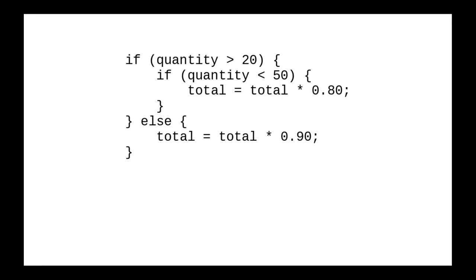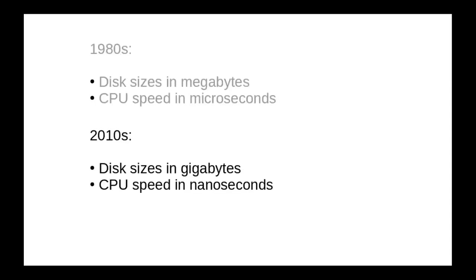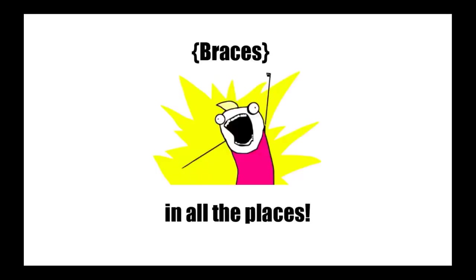Why do we have this no-braces-with-one-statement rule anyway? Back in the 1980s, when disk sizes were measured in megabytes or kilobytes and CPU speeds were on the microsecond scale, every byte counted. Braces on 500 if statements would add a large burden, and minimizing code size was a worthwhile goal. Now disk space is measured in gigabytes and CPUs run at nanosecond speeds. Saving 100 nanoseconds and 50 bytes at the expense of 10 minutes of your time to debug because you forgot braces? Not even remotely worth it. When you're writing if-else statements, use braces in all the places.